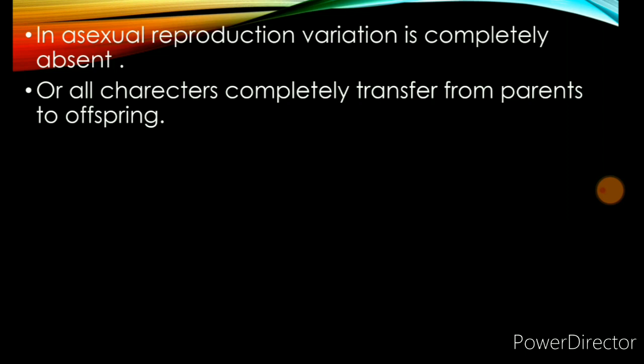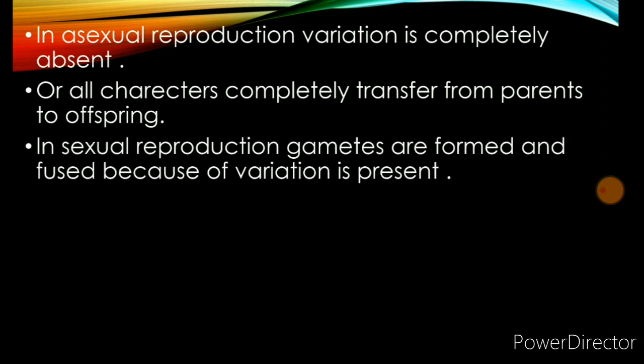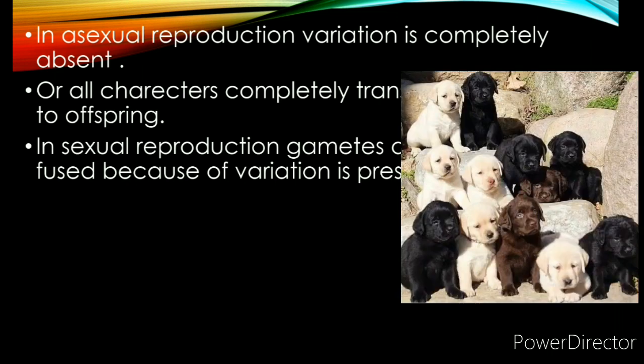In sexual reproduction, gametes are formed. In sexual reproduction, male and female — two parents participate. The gametes are formed and fused with each other, and because of the characters of both parents, we can see these in the offspring.